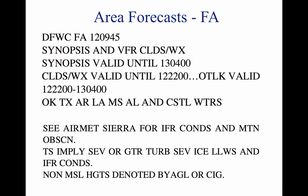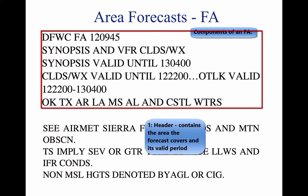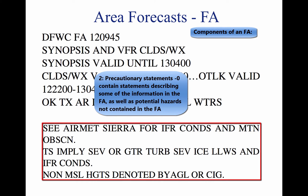Area forecasts are typically disseminated in four sections. 1. Header: DFWC FA 120945 gives the location identifier of the source of the FA, the date and time of issuance, the valid forecast time, and the area of coverage. 2. Precautionary statements: IFR conditions, mountain obscurations, and thunderstorm hazards are described in this section. Statements made here regarding height are given in MSL, and if given otherwise, AGL or ceiling (CIG) will be noted.